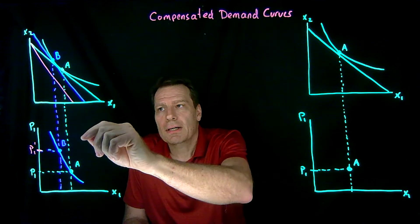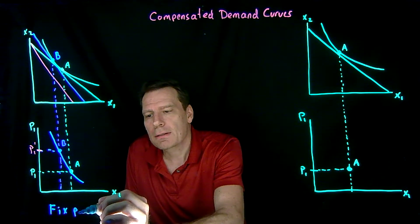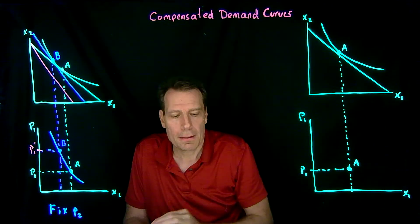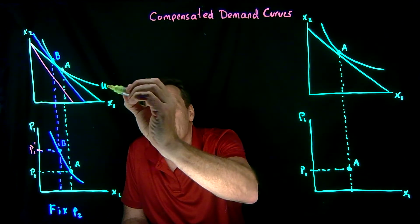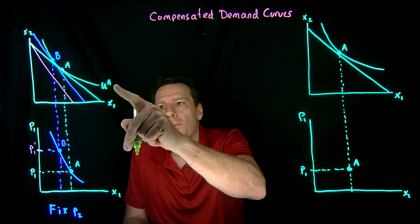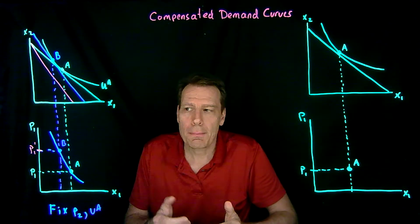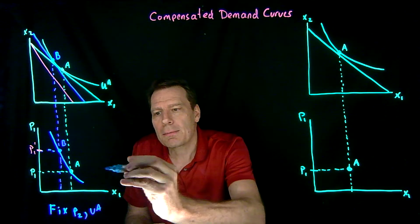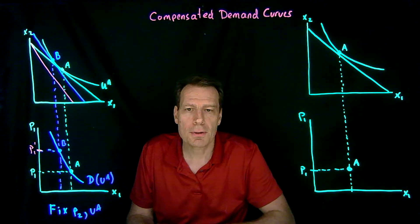The compensated demand curve no longer holds income fixed. On the regular demand curve we hold income and the price of good 2 fixed. Now we still hold the price of good 2 fixed, but income changes because we're giving compensation as prices rise. So instead of fixing income, we fix the indifference curve. As we get compensated, we always end up on the same indifference curve — fixed at Ua — and we ask how much you'd consume as prices change while staying on that same indifference curve.